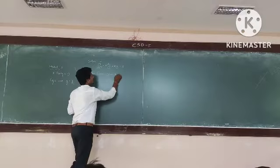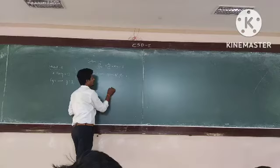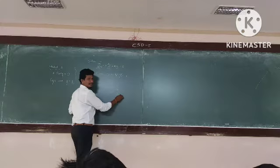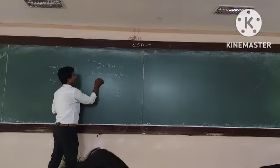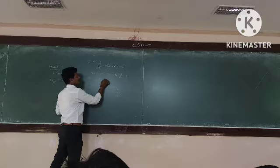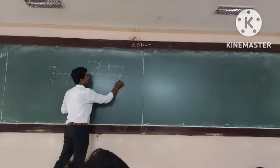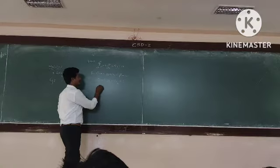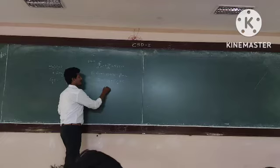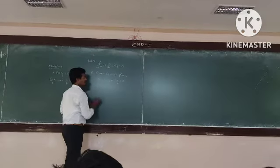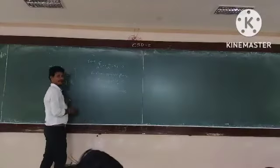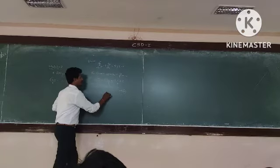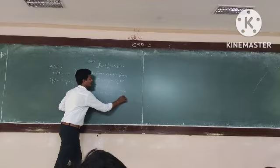The given operator form: d square y minus 8 into dy plus 15 into y equal to 0. Next, taking y common from each term: d square minus 8d plus 15 into y is equal to 0. This is equation star, in the form of f of d of y equal to 0.